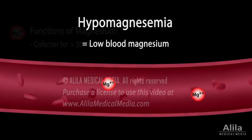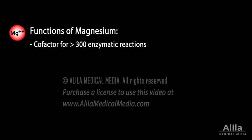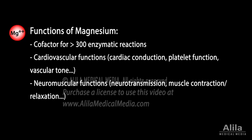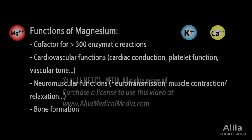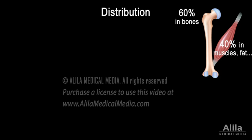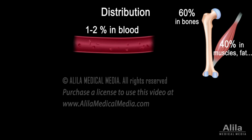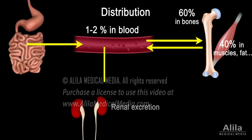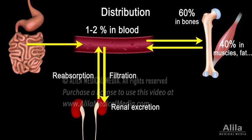Magnesium is an essential cofactor required for normal activity of hundreds of enzymes. It plays important roles in cardiovascular and neuromuscular functions, among others. Changes in magnesium concentrations may also affect the levels of potassium and calcium. In the body, most of magnesium is located in bones and soft tissue, and only about 1–2% is present in blood plasma. Magnesium level in the blood is maintained within a normal range by regulating intestinal absorption, exchange with bones, and renal excretion. Of these, renal magnesium reabsorption is the major control factor.